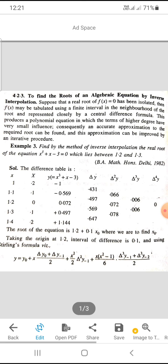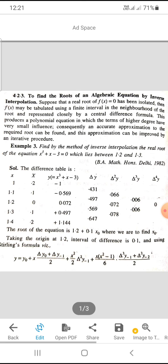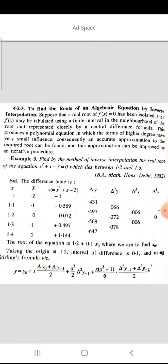When x = 1.4, X = 0.1, y = 1.144. First, we calculate Δy: 0.431, 0.497, 0.569, and 0.647. Δ²y will be 0.066, 0.072, and 0.078. Δ³y will be 0.006 and 0.006, and Δ⁴y = 0. The root of the equation is 1.2 + 0.1x₀, where we have to find the value of x₀.